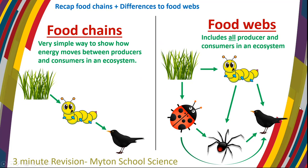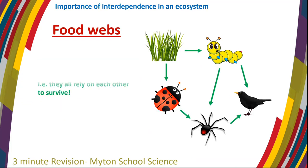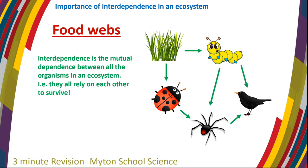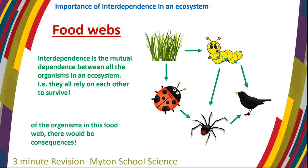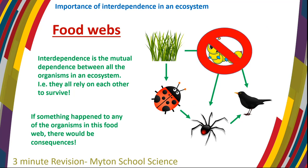That's really important when we talk about something called interdependence. The definition for interdependence is the mutual dependence between all organisms in an ecosystem — basically saying they all rely on each other to survive. If something happens to anything within this food web, there will be consequences; animals will die or populations will increase. Our example is the caterpillars are wiped out by a pesticide. We might find that spiders and blackbirds will not have as much food, so they'll probably be eating more of the ladybird, meaning the ladybird population is going to suffer.